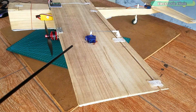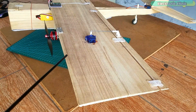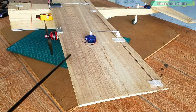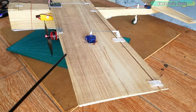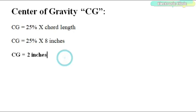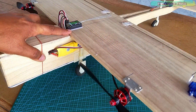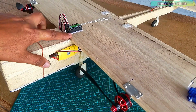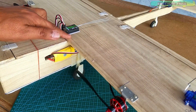The CG, or center of gravity, should be set at 25 to 33 percent of the chord length from the leading edge of the wing. Our chord length is 8 inches, so our CG is at 2 inches from the leading edge. The angle of attack should be 3 to 4 degrees. For now I didn't add any angle of attack because I want to check how this affects the flight.